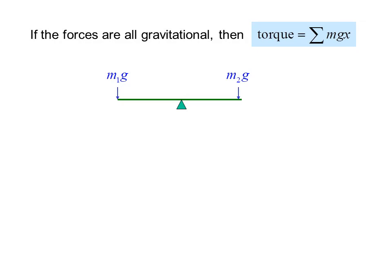If the forces are all gravitational, then torque equals the summation of mass times g, which is the acceleration due to gravity, times x, which is the distance. If the net torque is zero, then the system will balance.